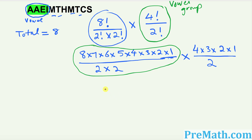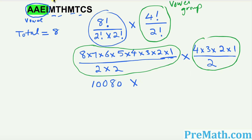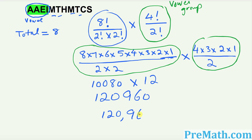We're going to get 10,080. Now let's take care of the vowel group part: 4 times 3 times 2 times 1 divided by 2. That gives you 12. Multiply them out and that gives you 120,960. That means 120,960 is our answer.